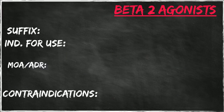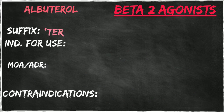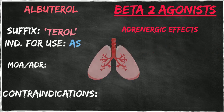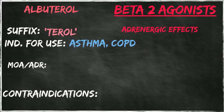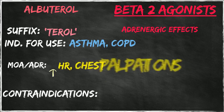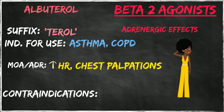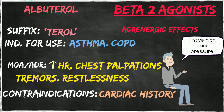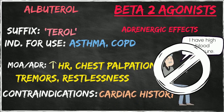The most common beta-2 agonist drug used is albuterol. The common suffix of drugs in this category is -TEROL. Albuterol is used for the adrenergic effects on the lungs, causing relaxation of smooth muscle within the airways leading to bronchodilation. Albuterol is a mainstay of treatment for patients with chronic pulmonary conditions like asthma or COPD. Because beta-2 receptors are located in several areas including the cardiovascular system, the side effects include increased heart rate, chest palpitations, tremors, and restlessness. Patients with underlying chronic cardiac conditions like hypertension should use this drug cautiously due to potential exacerbation or worsening of the cardiac condition.